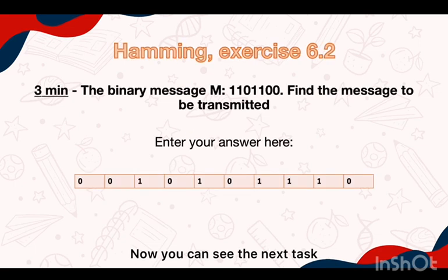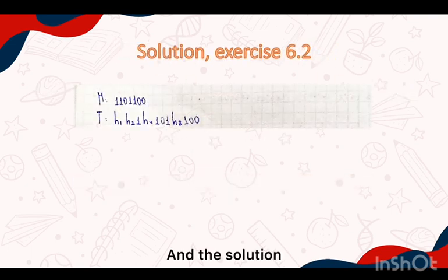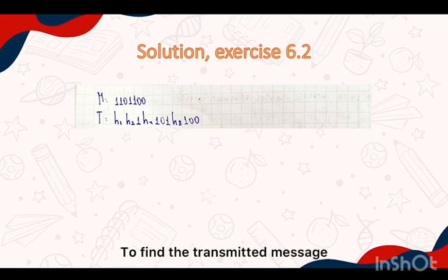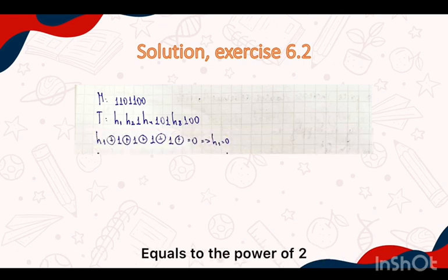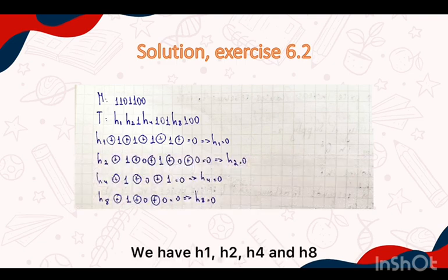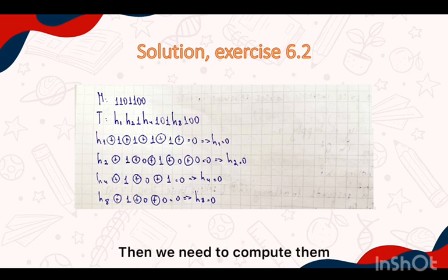Now you can see the next task and the solution. In this exercise we use the Hamming bits to find the transmitted message. We put them on the places equal to the powers of 2, so in our binary number we have h1, h2, h4, and h8. Then we need to compute them.